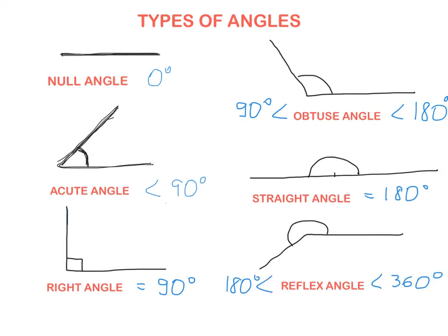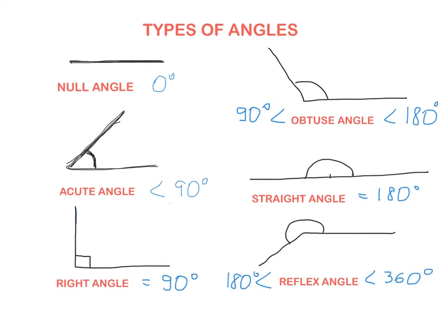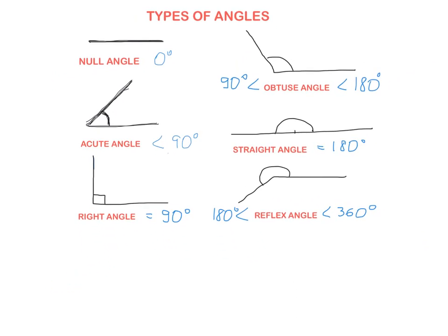The next type: if we have 360 degrees, this is the full circle. We can draw it and mark it with a full circle arc. That's the difference between the null angle and the full angle — in the null angle the two arms lie on each other with no marked region, while in the full angle we mark the complete circle. This is the full angle: 360 degrees.